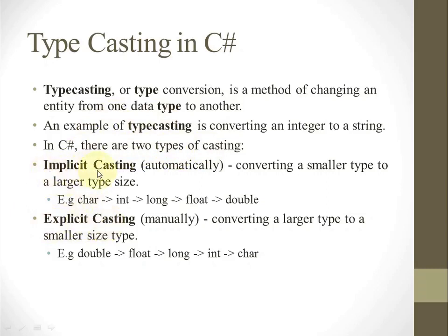What is implicit casting? This casting is done automatically by C-Sharp. It involves converting a smaller type to a larger type size. For example, a character is a smaller type and can be converted to integer. Integer can be converted to long, long into float, and float can be converted to double — meaning the sizes go from smaller type to a larger type.